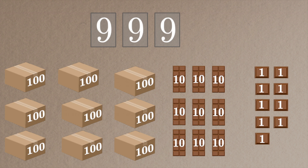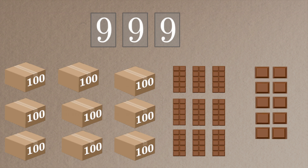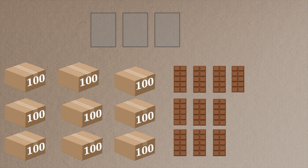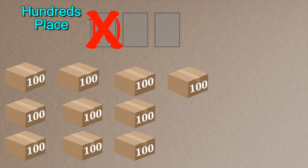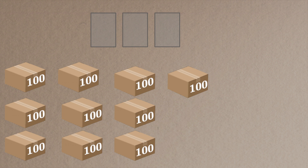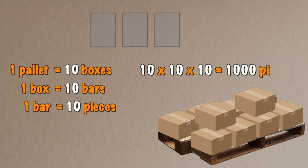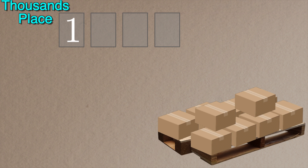So what happens when I add that extra piece to 999? I've got 10 single pieces of chocolate, so I group them into another bar. But that means I've got 10 bars of chocolate, so I group them into another box. But that means I've got 10 boxes of chocolate. I can't put a 10 in my hundreds place because number places can only hold one digit at a time. So I group those 10 boxes together onto a pallet which can hold exactly 10 boxes, or 1,000 pieces of chocolate. I add an extra number place to the left — and we're going to call it the thousands place.